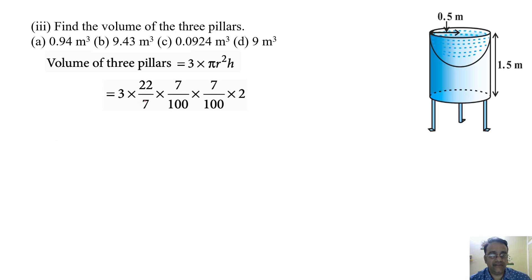7 cancels, so what we will do? We will multiply 3 × 22 × 7 × 2. So 924.